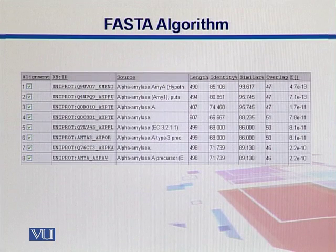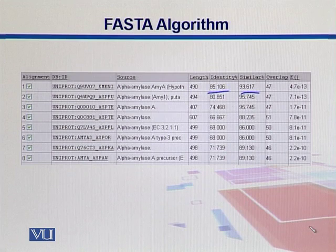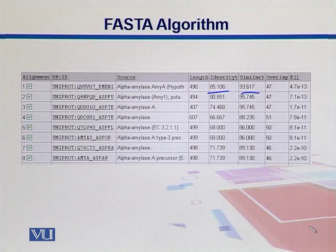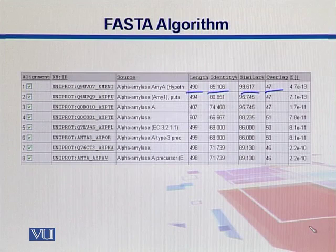After seeing those parameters and running the algorithm, we get the outputs. For this sequence, the top result is the alpha amylase protein, with 93.61% similarity and 85.106% identity. The difference between identity and similarity is: identical means exactly the same, while similarity means they are pretty close. We can look at substitution matrices to determine whether two amino acids are similar. Similarities are always higher than identities. The total length of that protein is shown, the overlap between the two sequences is 47, and the E-value — which is a scoring scheme we will discuss in a later section — is 4.7E-13. Lower E-values are better.